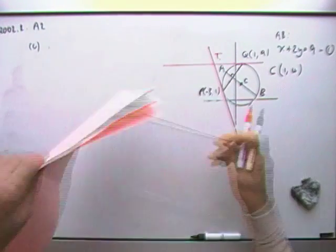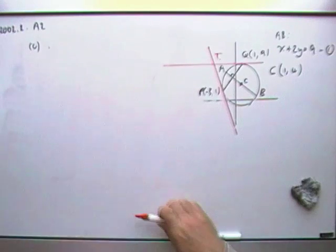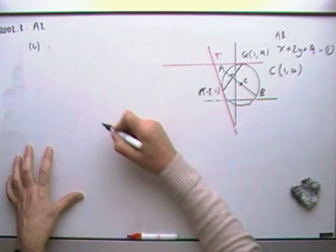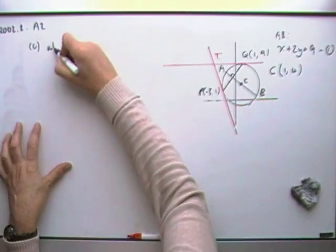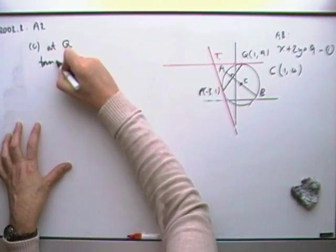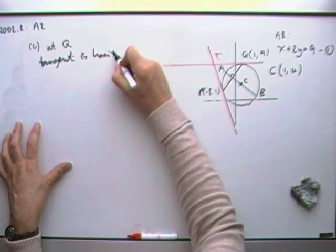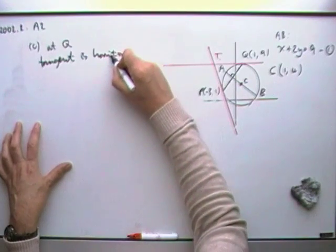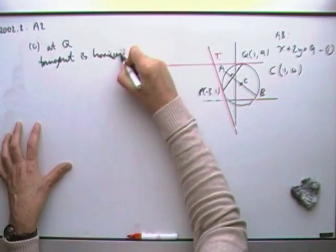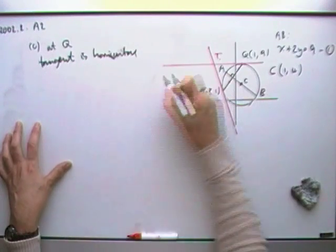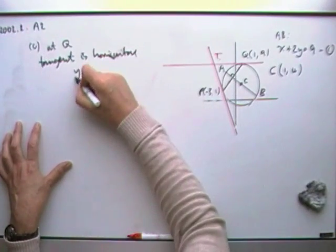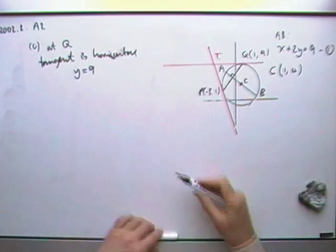The first bit just says, what's the equation of the tangent at q? Well, that's easy. The tangent at q is going to be horizontal. So at q, the tangent is horizontal. That means its equation is going to be y equals something. So the equation is y equals 9.